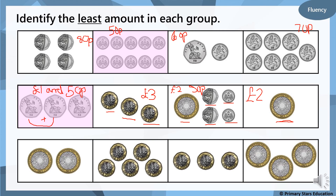Moving on to the last one — we're still looking for the least amount. We've got a two pound coin add a two pound coin: two add two gives us four pounds. Now we've got five one pound coins — the total amount is five pounds. Here I've got three one pound coins: one, two, three — three pounds. And this final box has three two pound coins: three twos — two, four, six — we've got six pounds. Which box is showing the least amount? It is the three pounds.